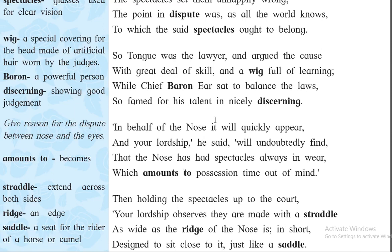The next figure of speech: 'While chief baron Ear sat to balance the laws' — the figure of speech here is metaphor. Why? Because an indirect comparison is made between the chief baron and the Ear, who is the judge in the poem. 'Famed for his talent in nicely discerning' — who is famed for good decisions? Judges. So Ear is indirectly compared with a judge. The figure of speech metaphor is used in these two lines.